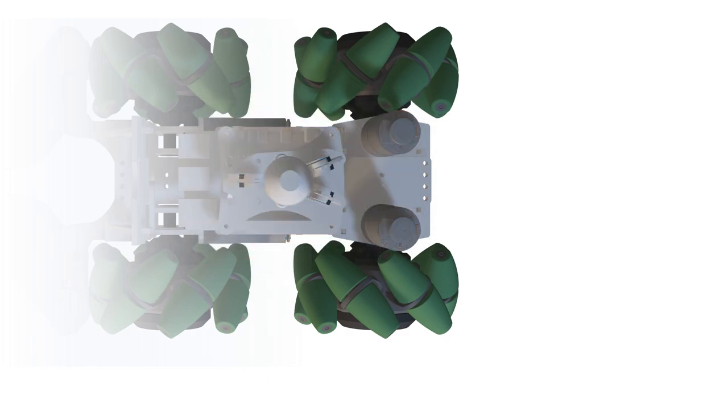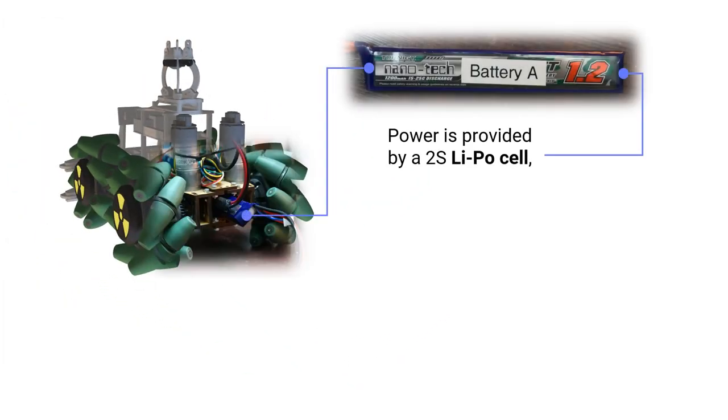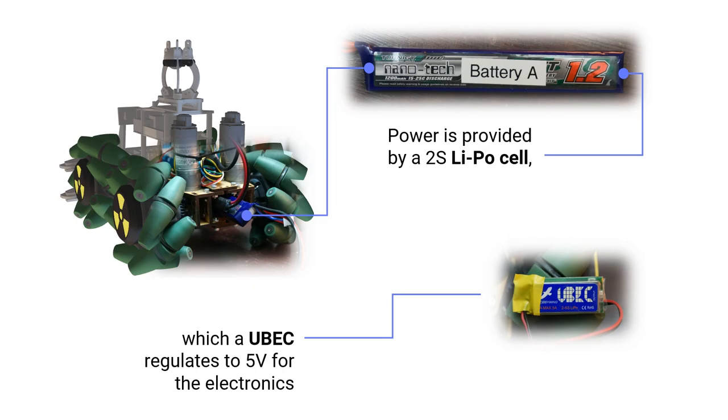The 1B is powered by a 1200 mAh 2S LiPo cell and a UBEC regulator provides a constant 5-volt supply for electronics.